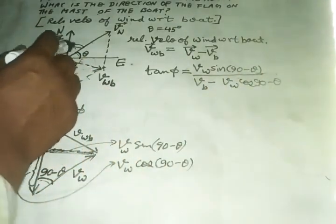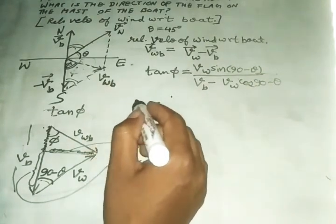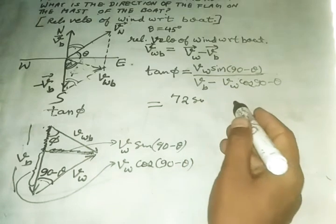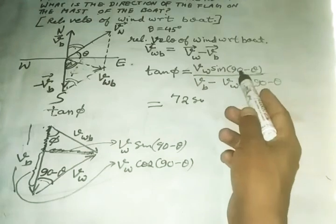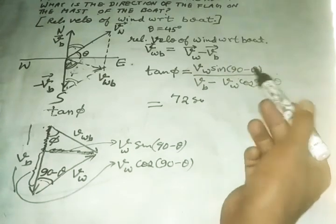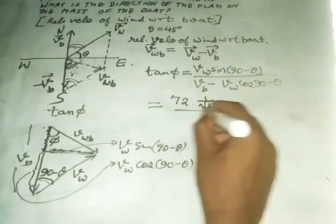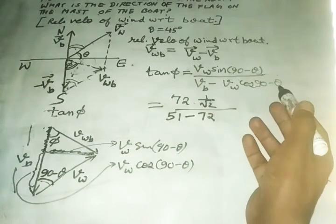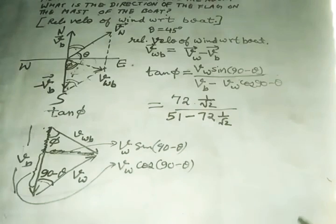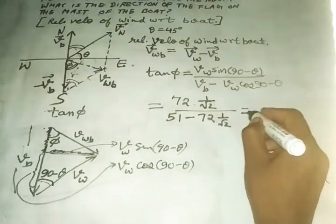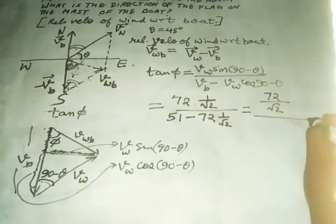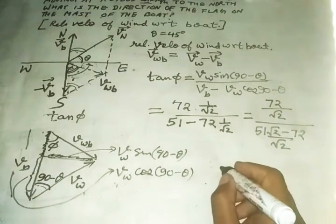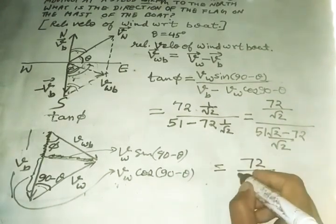And what is the value of θ? Northeast direction 45 degree. VW wind 72 sin(90-θ) is cos θ, cos(90-θ) is sin θ. 90-θ is 90-45, so 45. Sin 45 and cos 45. Sin 45 value is 1/√2, and upon VB 51 minus 72 cos 45, which is 1/√2.